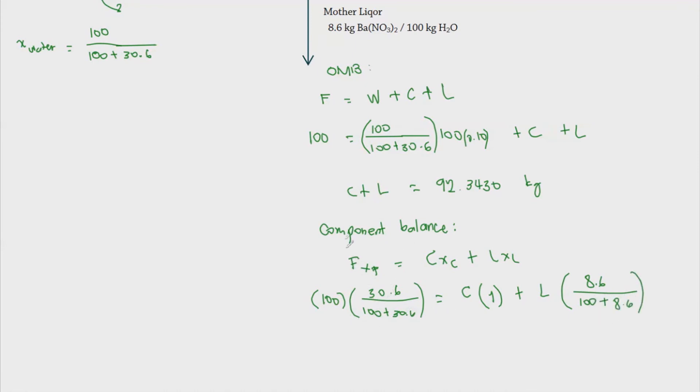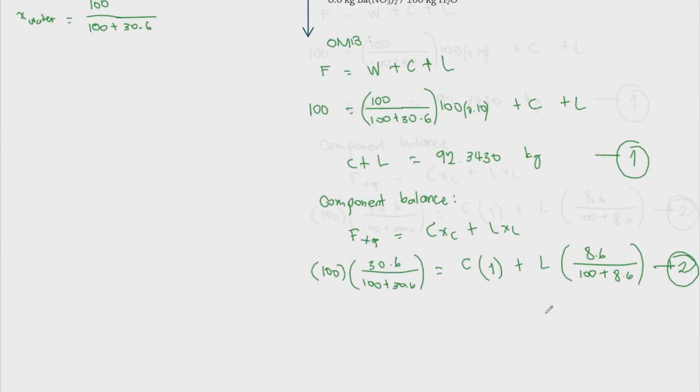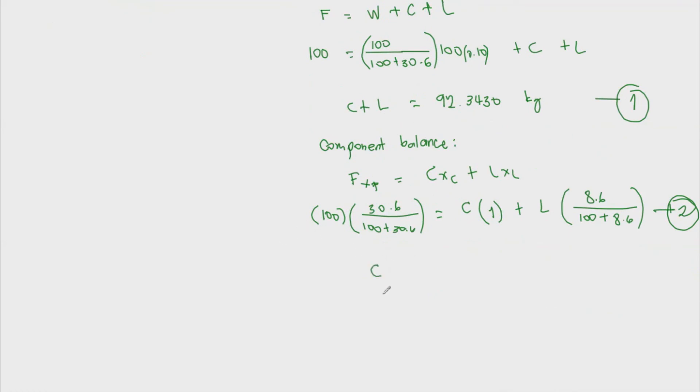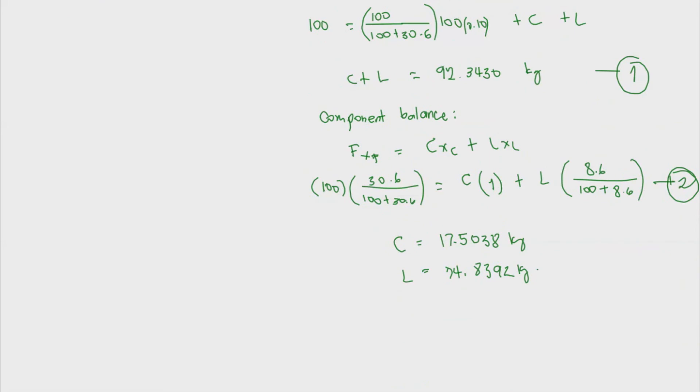So with this, we have the first equation and then this one is the second equation. So we can just use the two equations to solve for C and L. So we have the crystals at 17.5038, that's kilogram. And then the liquor is 74.8392 kilograms. So we just need the amount of crystals in this problem. So let's just box this final answer.